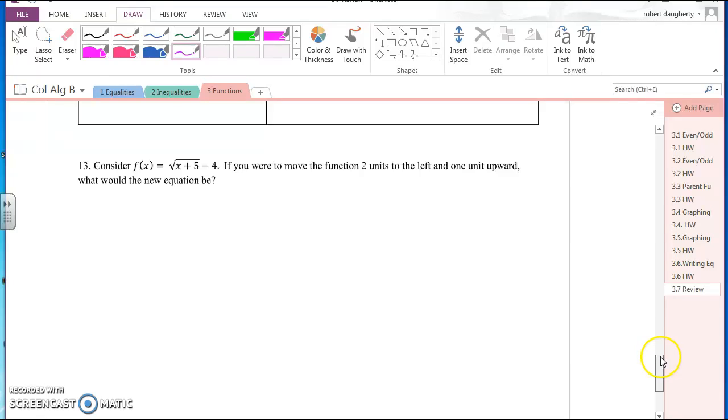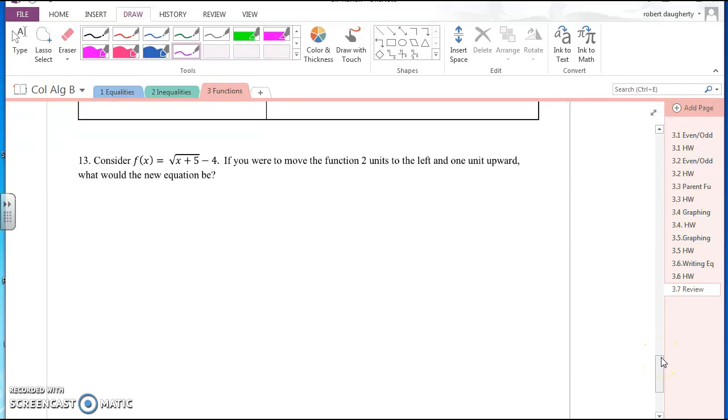And let's look at the last problem here. If I've got f(x) is square root of x plus 5 minus 4, so let's write that down. f(x) equals square root of x plus 5 minus 4.